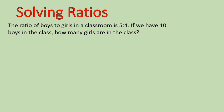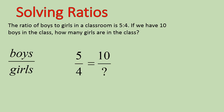Here's a word problem: the ratio of boys to girls in a classroom is 5 to 4. If we have 10 boys in the class, how many girls are in the class? This is a pretty standard type of ratio problem. They give you a ratio — boys to girls, 5 to 4 — and then say there are actually 10 boys; how many girls are there? The key to getting this correct is making sure you put boys on top and girls on the bottom of the fraction: 5 boys over 4 girls equals 10 boys over how many girls. If you set it up correctly, you'll always get the correct answer.